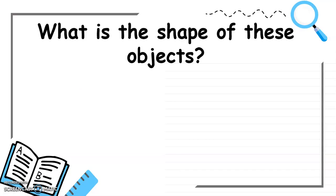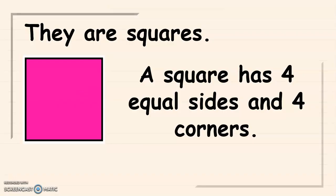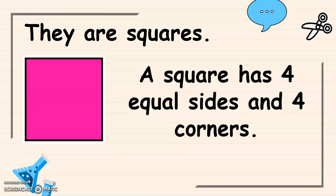Now, what is the shape of these objects? Good job! They are squares. And a square has 4 equal sides and 4 corners.